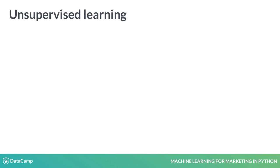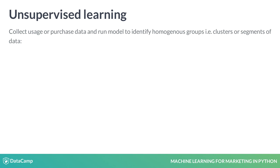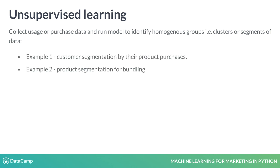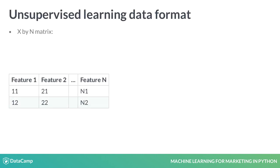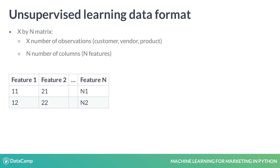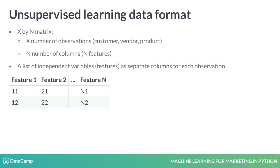In contrast, unsupervised learning techniques focus on using the data about the observations to group them into clusters with common characteristics. A popular example is customer segmentation based on the product purchase history. Unsupervised learning data is structured as an X by N matrix with X number of observations that we want to group together and N number of features. There is no target variable in unsupervised learning.